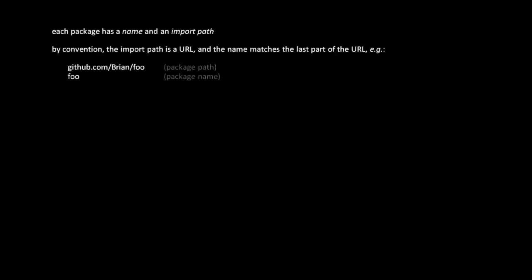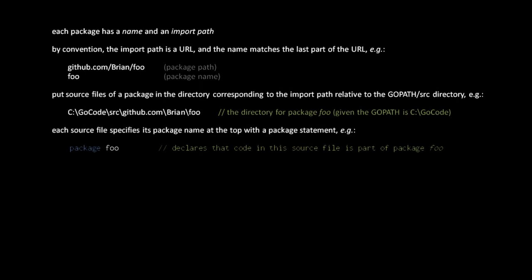Code in Go is organized into namespaces called packages. Each package is known by a name, usually a short single word, and an import path. The import path can be any sequence of characters, but by convention the import path should be a URL pointing to a git or mercurial repository containing the source files of the package. By convention, the last part of the import path matches the package name. For example, we have a package named foo with the import path github.com/brian/foo. When you install the Go tools on your system, you should set an environment variable GOPATH to a desired working directory. Package source directories live under a directory named src, so the source files for a package with import path github.com/brian/foo would be at c:/gocode/src/github.com/brian/foo.